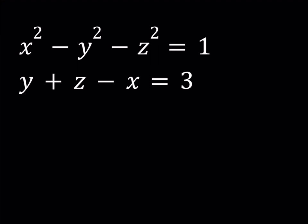And let's get started. We do have this Diophantine system: x squared minus y squared minus z squared is equal to 1, and y plus z minus x is equal to 3. So we're looking for integer solutions.